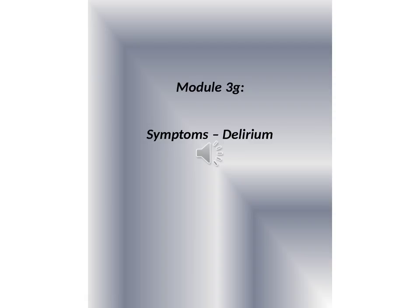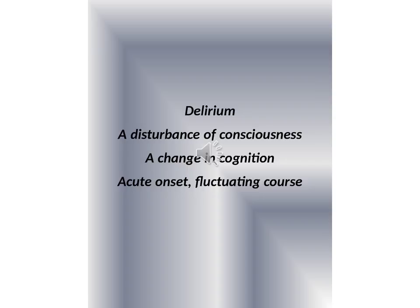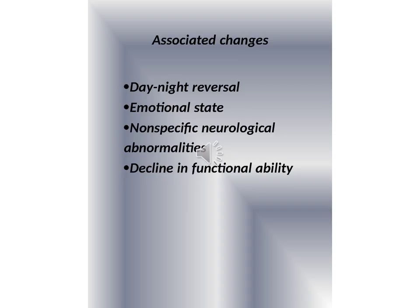Module 3G: Symptoms. Delirium is characterized by a disturbance of consciousness, a change in cognition, acute onset, and a fluctuating course.